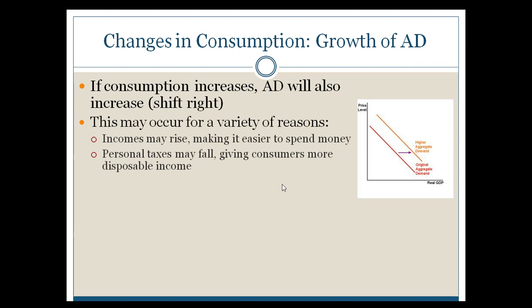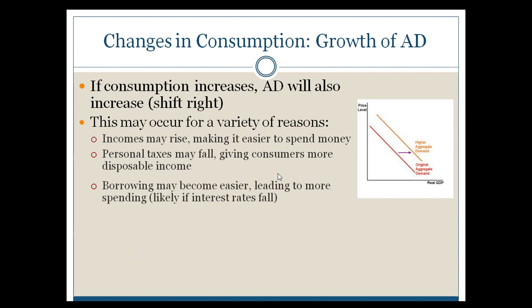Whereas if you give a tax decrease to a middle-income person, those people probably have a lot of bills and a lot of things they need. Generally speaking, the less money they're paying out towards taxes, the more they will spend it. So that will definitely have a positive impact in terms of increasing aggregate demand.